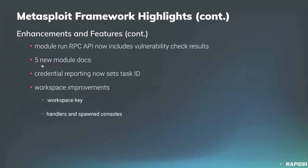Adam Kamek updated the run RPC API to now include vulnerability check results when you run a module. Community contributor Ken LaCroix continues his campaign of module docs — he wrote docs for five new modules. Jeffrey Martin updated credential reporting code to also set the associated task ID if one is present. Jeffrey also made several improvements to workspace and framework, including commonizing workspace as the key, specifying workspaces, and ensuring spawned handlers and consoles have a workspace attached.